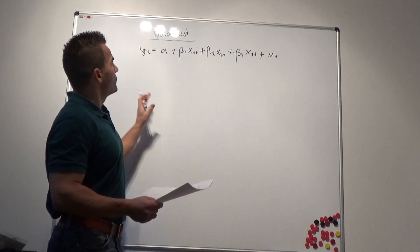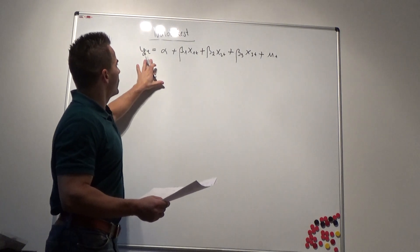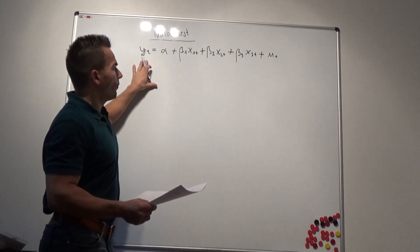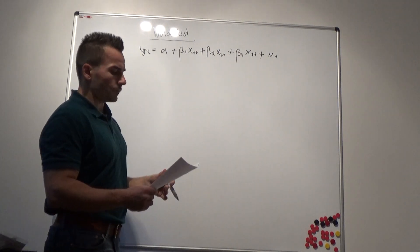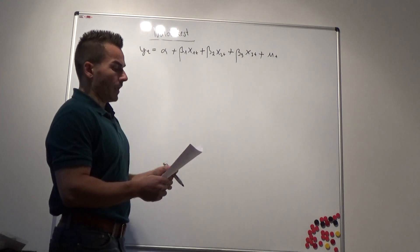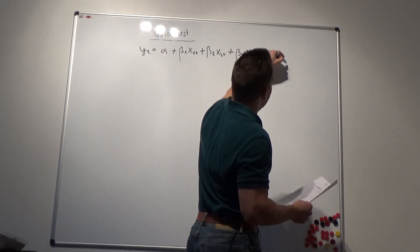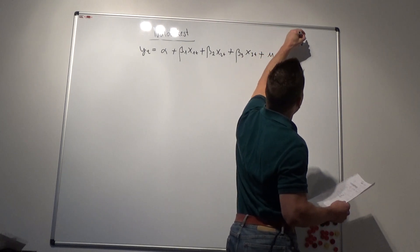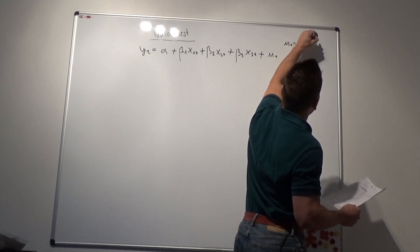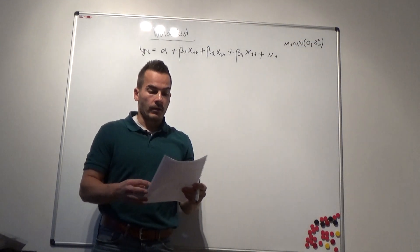Basically, what we are interested in is describing the evolution of our portfolio using the Fama-French three-factor model. As usual, we assume that ut is distributed as normal with expectation zero and variance sigma squared u — the standard assumption for the linear regression model.